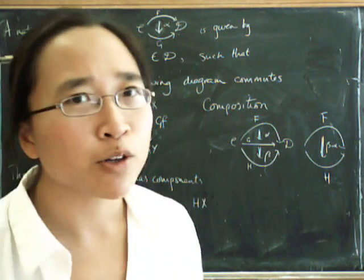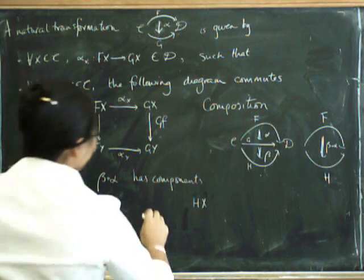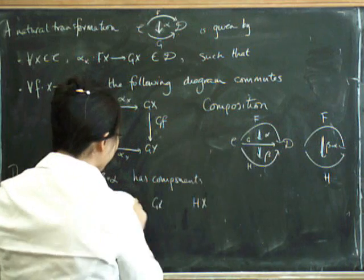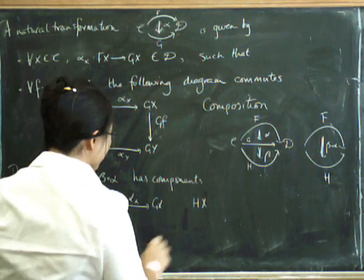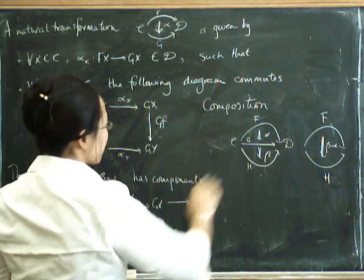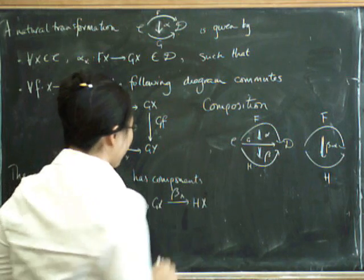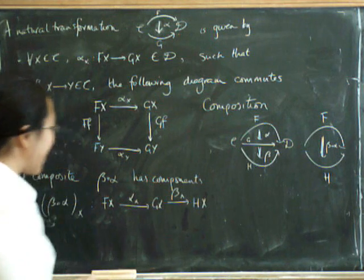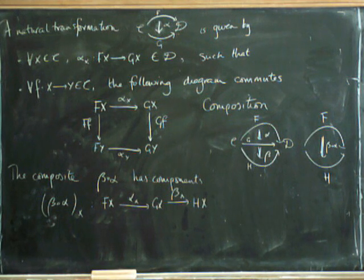Hmm, how could we possibly do that? Okay, well look. If we stick G of X in the middle, we've got a component of alpha that goes from F of X to G of X, and we've got a component of beta that goes from G of X to H of X. So miraculously, we've now got a component that goes all the way from F of X to H of X. Fine.